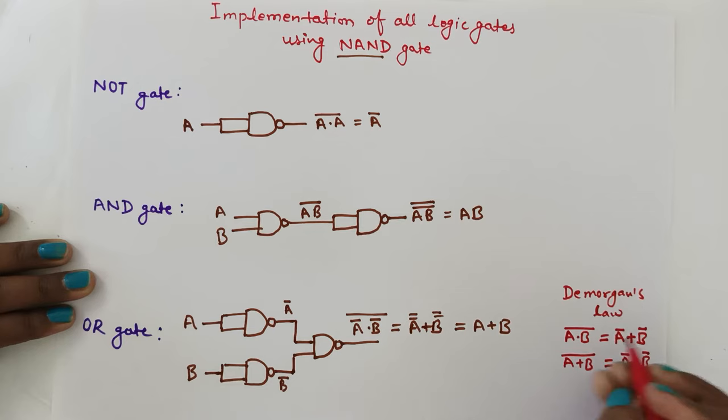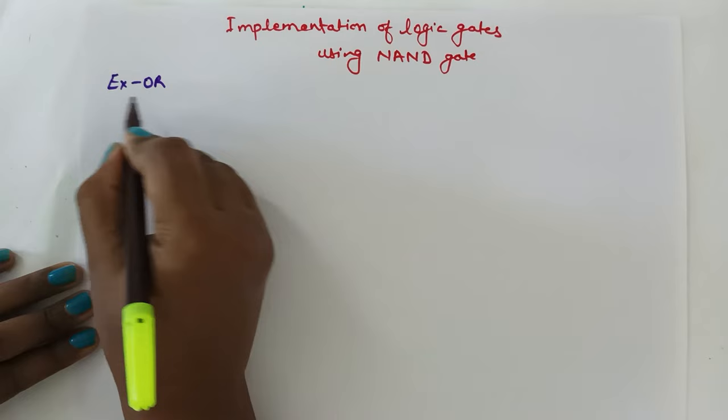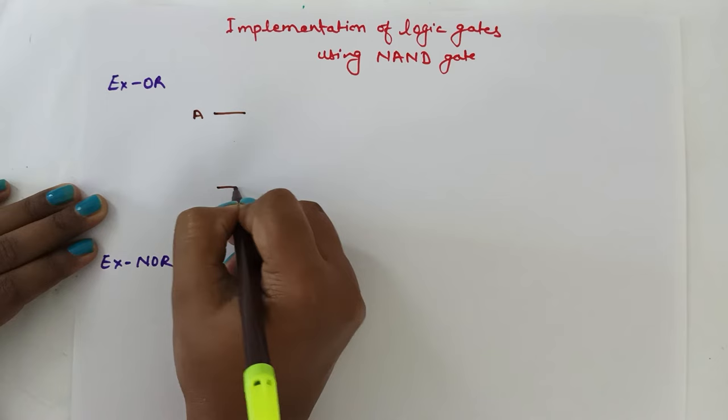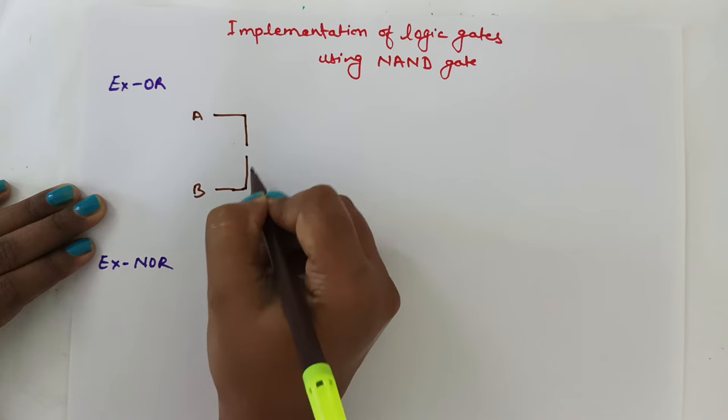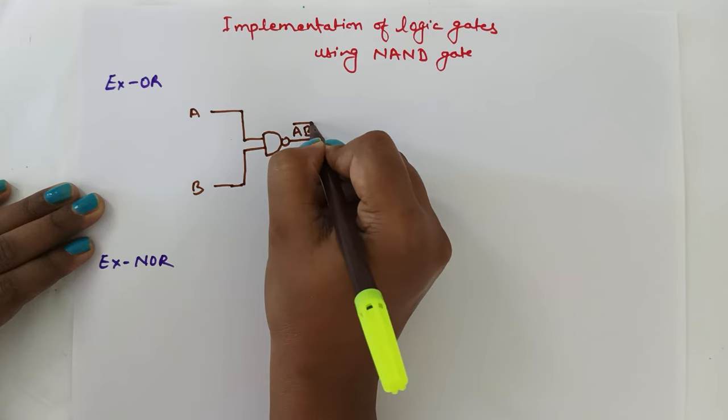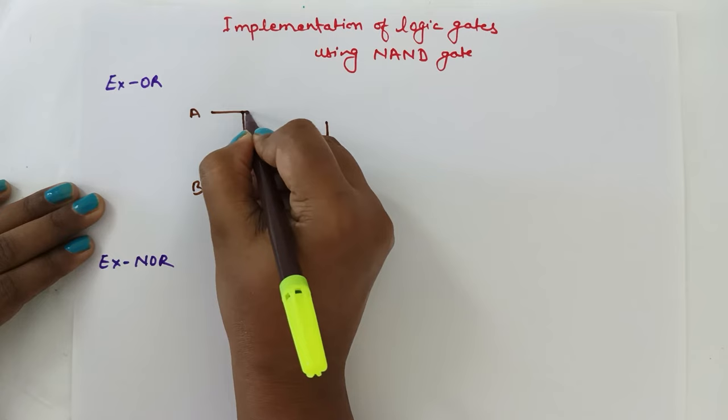Now let us design XOR gate using NAND gate. For designing XOR gate we need four NAND gates. If we have two inputs A and B, we give them to a NAND gate. The output will be AB bar.